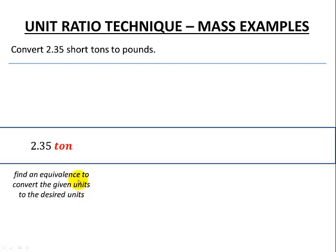We need to find an equivalence to change from our given units to the desired units. So we're going to look on our tables or some source we have. But please remember for our tests, we're going to use our tables for short tons to pounds. When I look that up, I see that one short ton is equal to 2,000 pounds. And that is from our tables of equivalences.